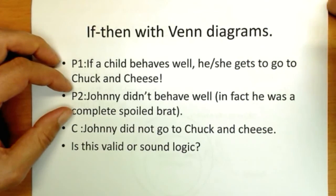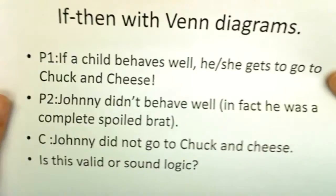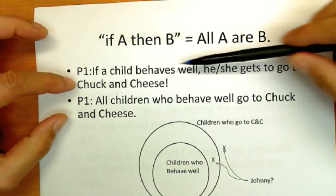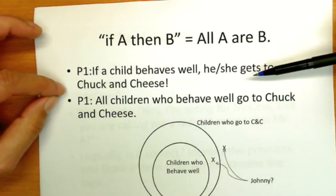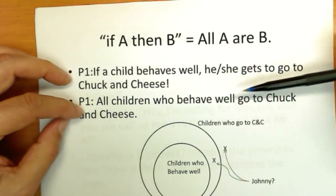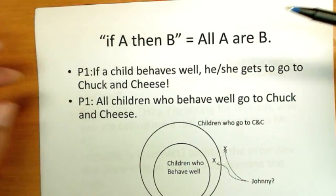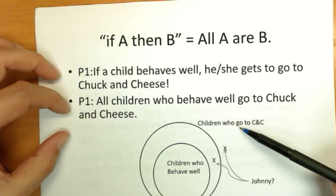If-then ones can be done on a Venn diagram. If-then is the same as all of something does something. So what we're going to rewrite is, if a child behaves well, he gets to go to Chuck and Cheese. Is the same thing logically as saying all children who behave well get to go to Chuck and Cheese. So if he's among those children who behave well, he gets to go. Children who behave well, children who go to Chuck and Cheese.